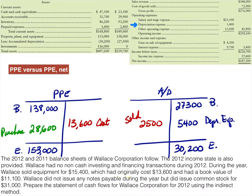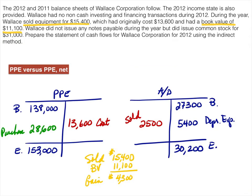In the operating activity section of the statement of cash flows we also analyze gains and losses. On our income statement we actually have a gain on the sale of this equipment, meaning we sold it for more than the book value by $4,300. The story tells us we sold equipment for $15,400, and that piece of equipment had a book value of $11,100. The difference between those two is the gain, which we can verify: the gain is $4,300, matching what's shown on the income statement.